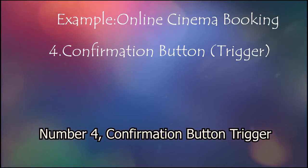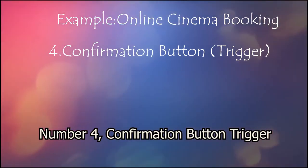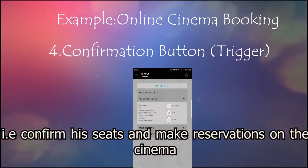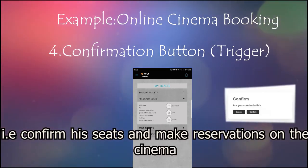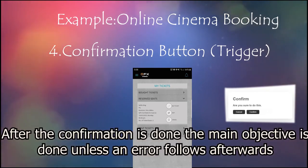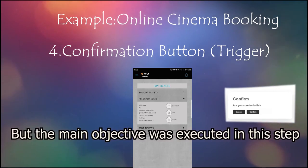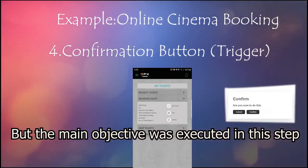Number 4: Confirmation button trigger. Now that the selection is done, all that is left to do is execute the order — that is, confirm his seats and make reservations at the cinema. After the confirmation is tapped, the main objective is done unless an error follows afterwards. But the main objective was executed in this step.